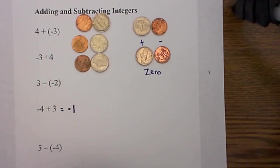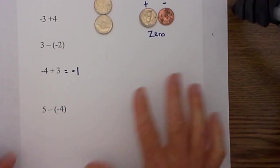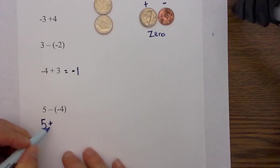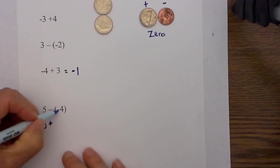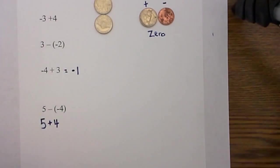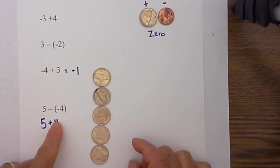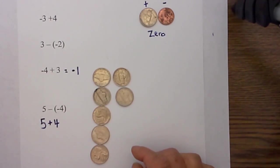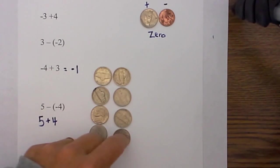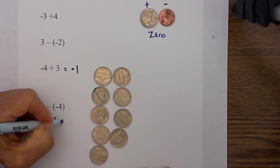Finally, we have one more subtraction problem. Whenever we have subtraction, I just convert it to an addition problem first — you will get the same answer. I change the subtraction sign to a positive and then change the sign of the number directly behind it, so that becomes a positive 4. Then I set it up: 5 positives — 1, 2, 3, 4, 5 — and then 4 more positives. There are 9 positives total, and we do not have zero pairs so they will not cancel. That equals positive 9.